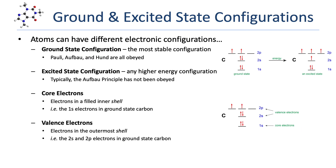Atoms are not locked into one specific electronic configuration. When all three rules — the Pauli Exclusion Principle, the Aufbau principle, and Hund's rule — are obeyed, the atom is said to be in the ground electronic configuration, which is the most stable configuration possible. If we apply energy to the atom, we can create an excited state — when one of those rules, typically the Aufbau principle, has been violated. For example, applying energy can lift one of the 2S electrons up into a 2P orbital, giving a higher energy configuration.